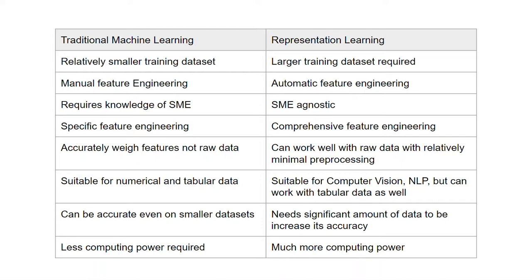Traditional ML tends to be accurate even if the datasets are relatively small. For the accuracy to increase in representation learning projects, the dataset needs to be significantly large. Lesser compute power is required to build traditional ML models. Much more compute power and GPU is required for building deep learning models.